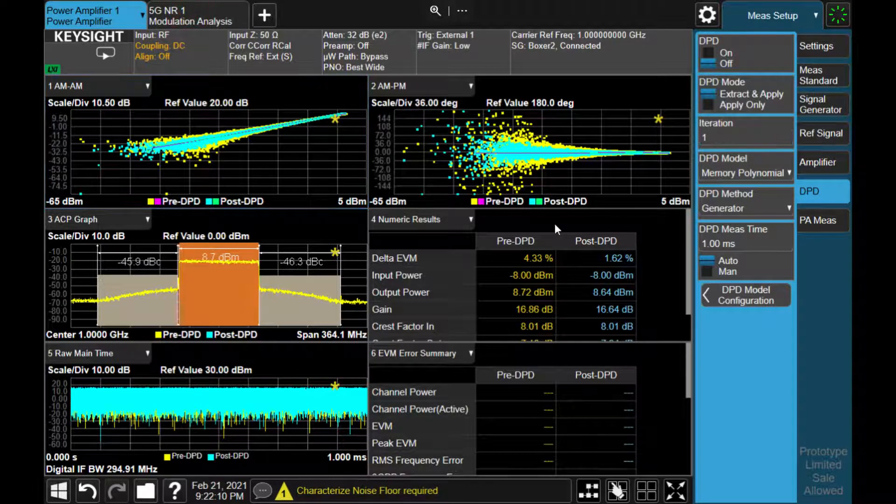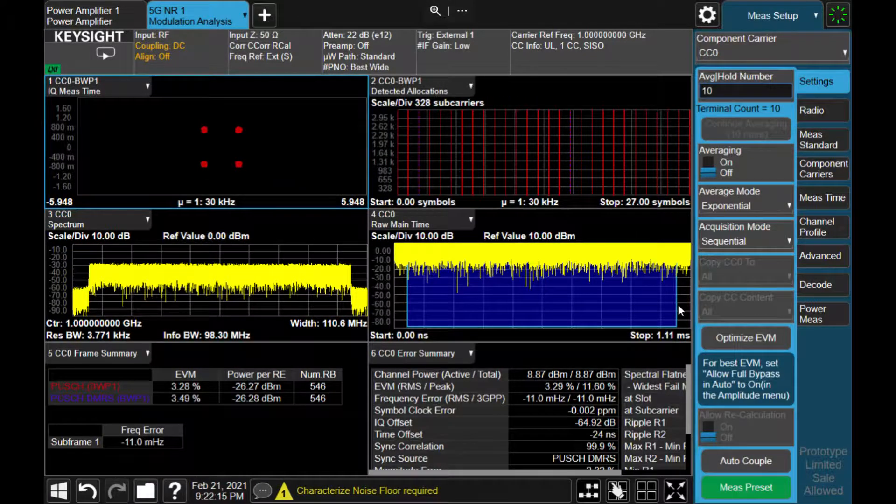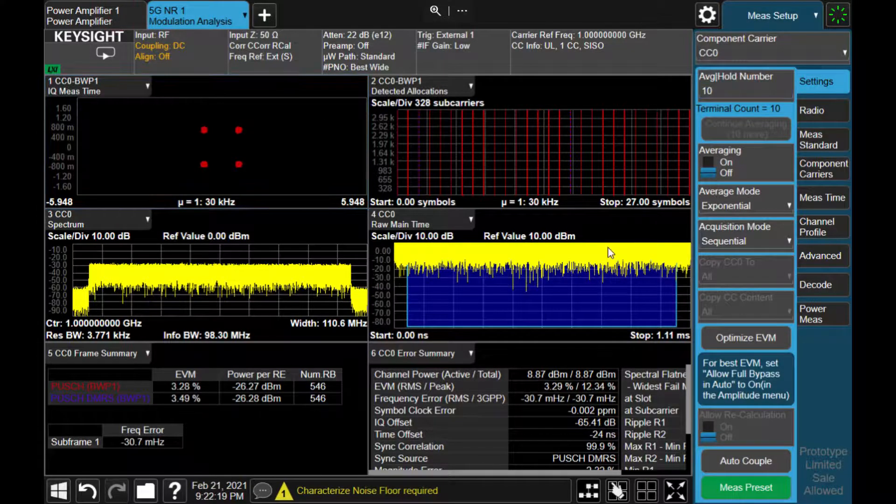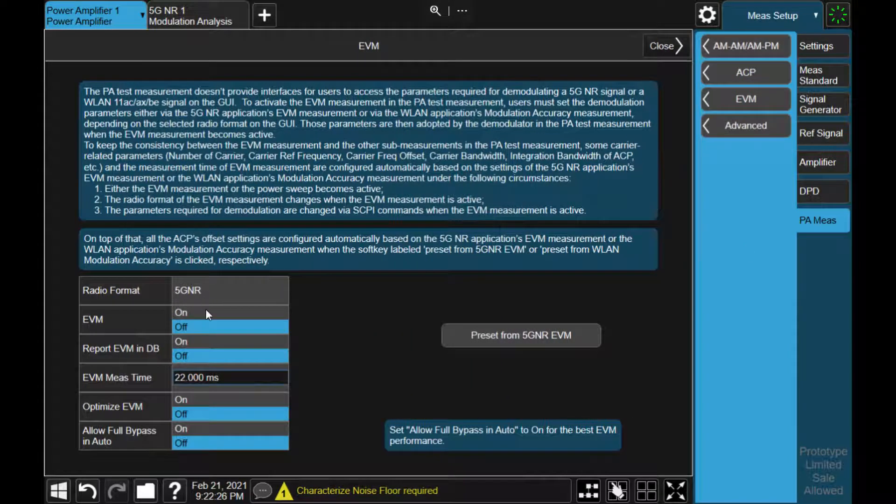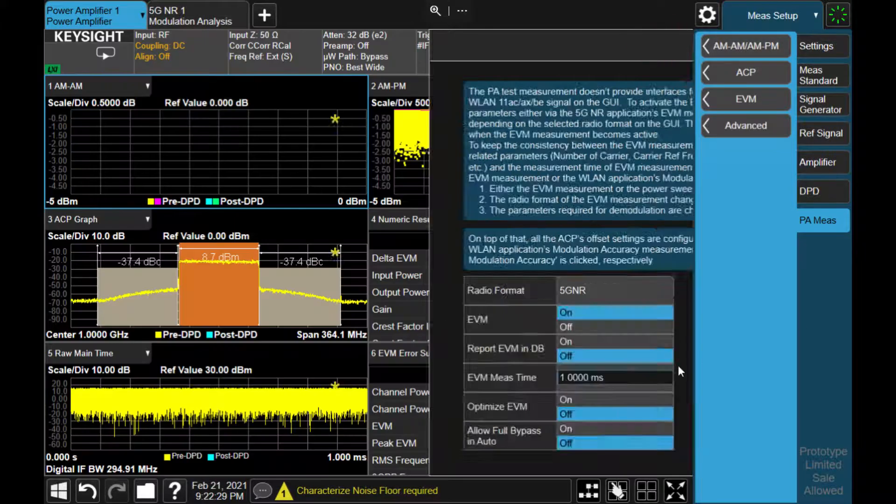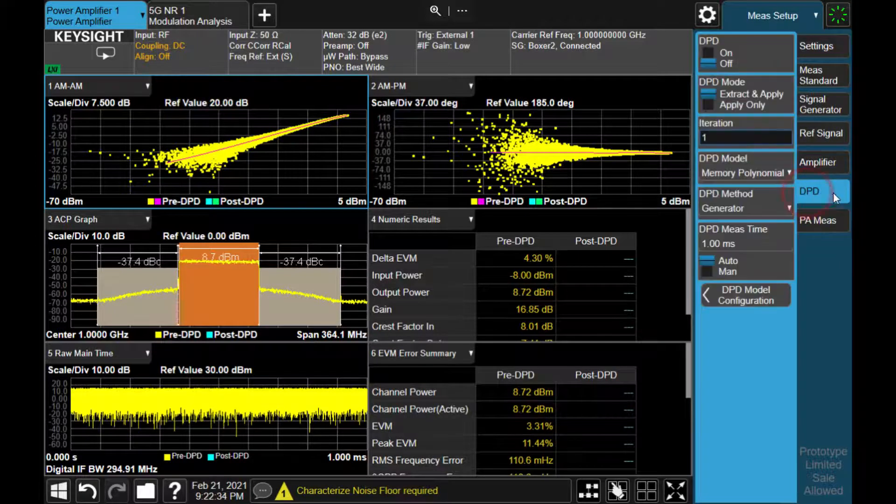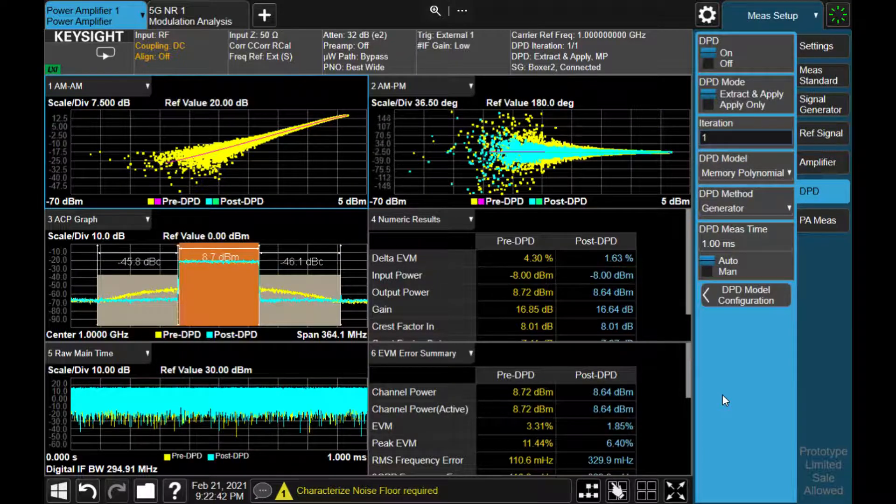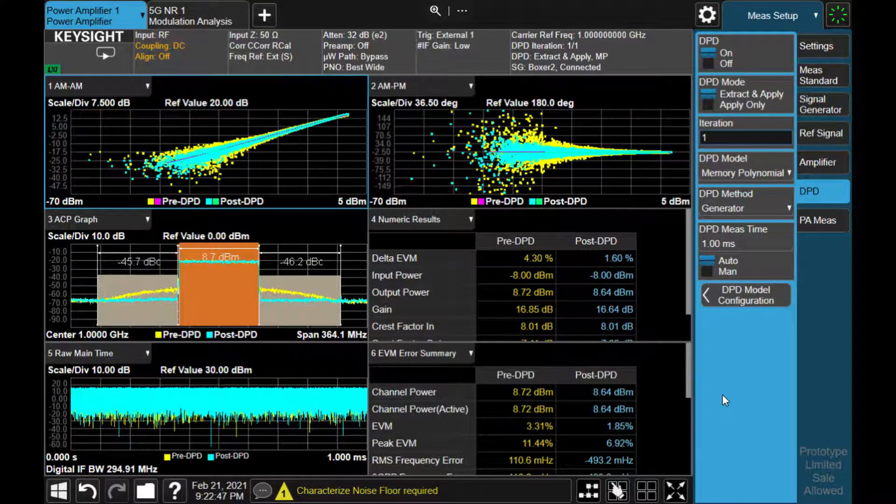Let's look at the EVM. Turn off DPD, then switch to the 5G NR mode. And now we are making the 3.3% EVM measurement. And going back to the PA mode, and actually the setup we had, the 5G NR mode, can be coupled in the PA mode. So once you coupled the setting, then you can make the same EVM measurement inside of the PA mode. And by enabling DPD again, then you can actually see the demodulated EVM is improved to 1.8%. You can see how DPD improved both ACPR and EVM.